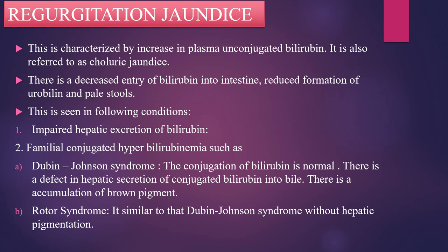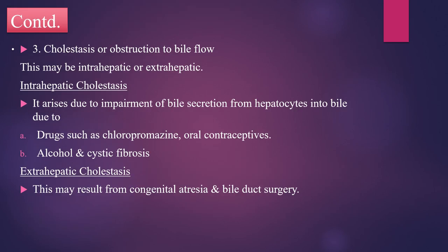In Dubin-Johnson syndrome, conjugation of bilirubin is normal, but there is a defect in hepatic secretion of conjugated bilirubin into bile, with accumulation of brown pigment. Rotor syndrome is similar to Dubin-Johnson syndrome but without hepatic pigmentation. Another cause of regurgitation jaundice is cholestasis or obstruction to bile flow, which may be intrahepatic or extrahepatic. Intrahepatic cholestasis arises due to impairment of bile secretion from hepatocytes, caused by prolonged use of drugs such as chlorpromazine, oral contraceptives, alcohol, and cystic fibrosis. Extrahepatic cholestasis may result from congenital atresia and bile duct surgery.